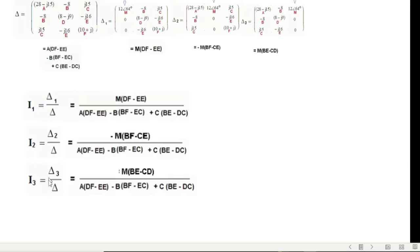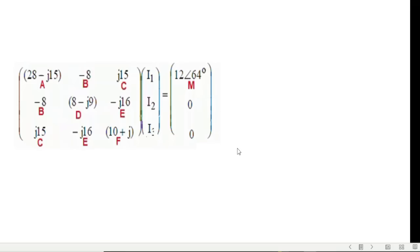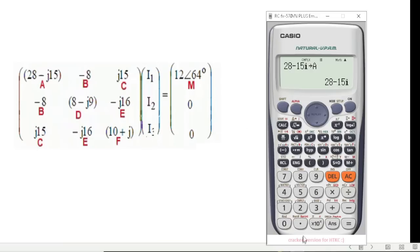Now we write the current equations: delta 1 at the numerator and delta at the denominator gives I1. For I2, we write delta 2 at the numerator, denominator remains delta. And for I3, we write delta 3 at the numerator, delta remains the same. So now we'll solve. The first step will be that we assign these variables in our calculator.